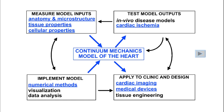In order to formulate our continuum mechanics model of the heart, we'll need to measure inputs to the model including the anatomy and microstructure, the mechanical properties of the tissue, and the mechanical properties of the cells. We require computational techniques such as numerical analysis, visualization and data analysis to implement and solve the model. And then in order to test the model predictions, we need to validate the results using physiological measurements in vivo, such as in a disease model of the ischemic heart. Finally, when the model is sufficiently validated, we will look at examples of applying these approaches to clinical and biomedical engineering design problems such as cardiac imaging analysis and medical device design.